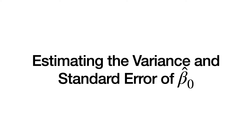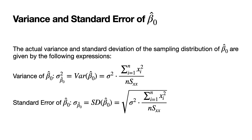Next, we'll obtain estimators of the variance and standard error of beta 0 hat. The actual variance of beta 0 hat is equal to sigma squared times the ratio of the sum of the squared x's over n times the corrected sum of squares S sub xx. The actual standard error of beta 0 hat is the square root of sigma squared times the sum of the squared x's divided by n times S sub xx. Again, if sigma squared is unknown, we're not able to calculate either the variance or the standard error of beta 0 hat, and so we would need to estimate those quantities.